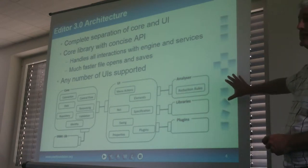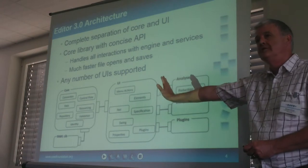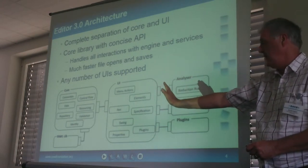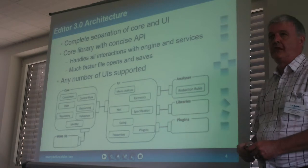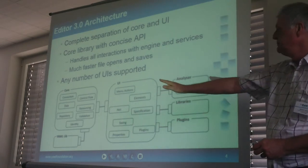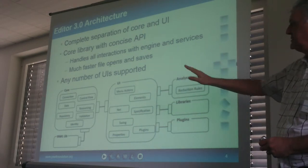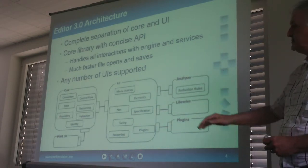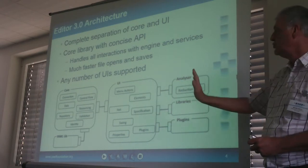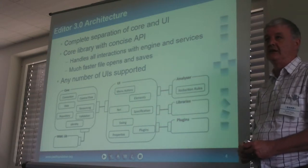The new architecture separates out entirely all of the core functionality and presents it through an API. So all of the resourcing perspective, control flow, data perspective, connections to the engine and the resource service, saving and opening of files — is all done through that core library jar file now.